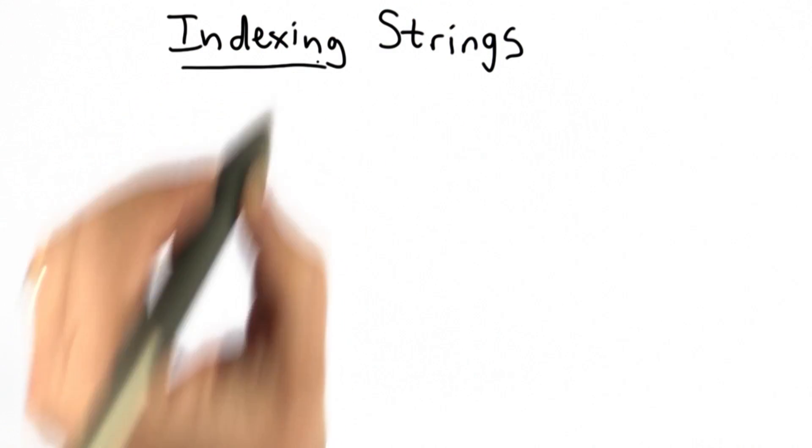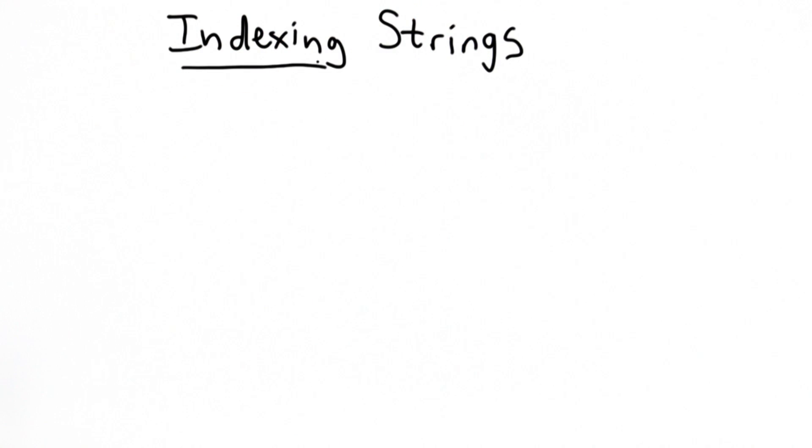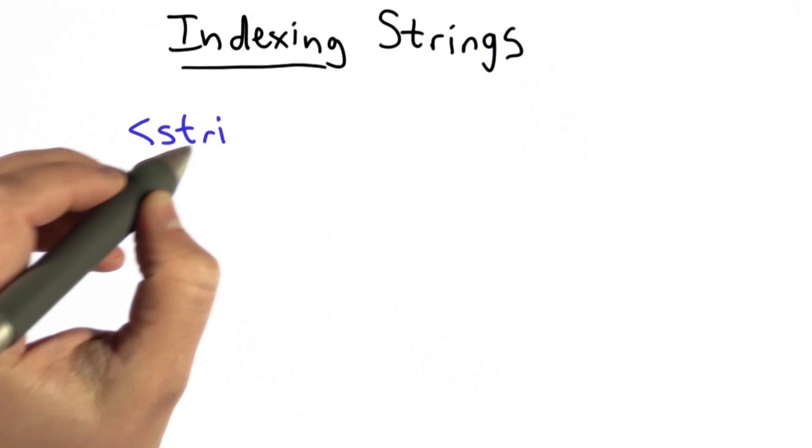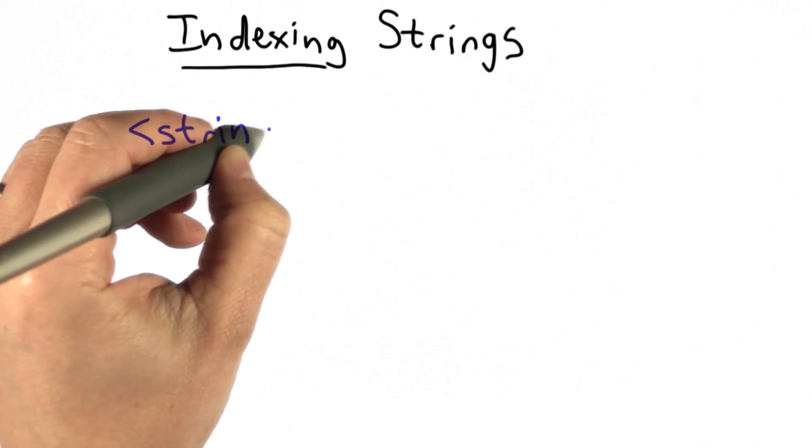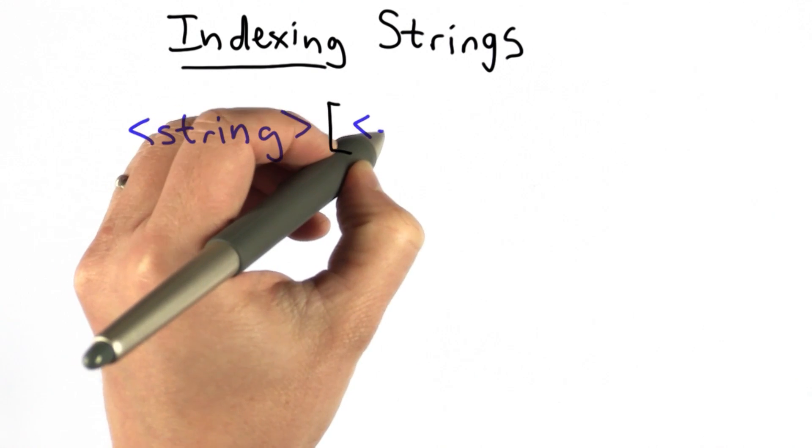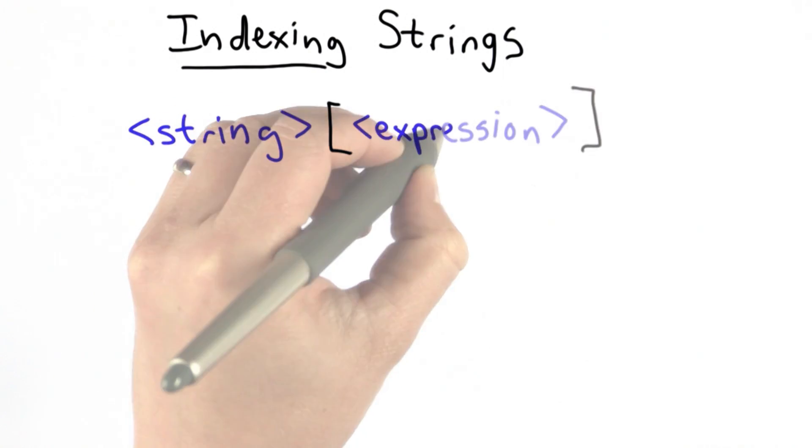One of the things we can do with strings that we can't do with numbers is we can extract subsequences from the strings. Remember what a string is - a sequence of characters. If we have a string, we can use the square brackets to extract parts of that string.